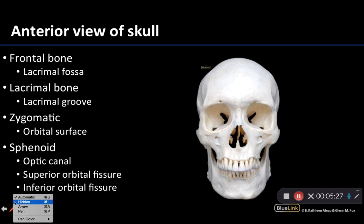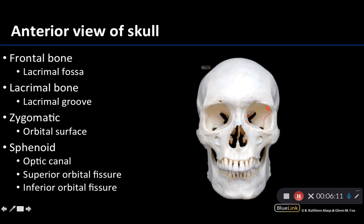Moving to a straight anterior view of the skull, you can see a few of these things a little better and a few not quite as clearly as in the anterior lateral view. You can see the lacrimal fossa a little bit better — this depression right in this region is where the lacrimal gland sits. The lacrimal groove is a little more difficult to see but would be right in this region. You can also see a nice view of the orbital surface with the suture line visible, a bit of the optic canal medially, a wing-like view of the superior orbital fissure, and just a little bit of the inferior orbital fissure.